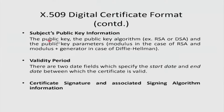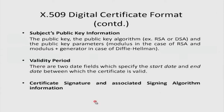The subject's public key information includes the public key itself, the name of the public key algorithm (RSA, DSA, ECDSA), and the public key parameters. For RSA, the parameter is the modulus; for DSA, it would be the modulus plus the generator. There is also validity information: two date fields specifying from which point in time the certificate is valid to which point — a start date and end date. Finally, there is the CA's signature: the bits comprising the signature and the algorithm used to sign it.